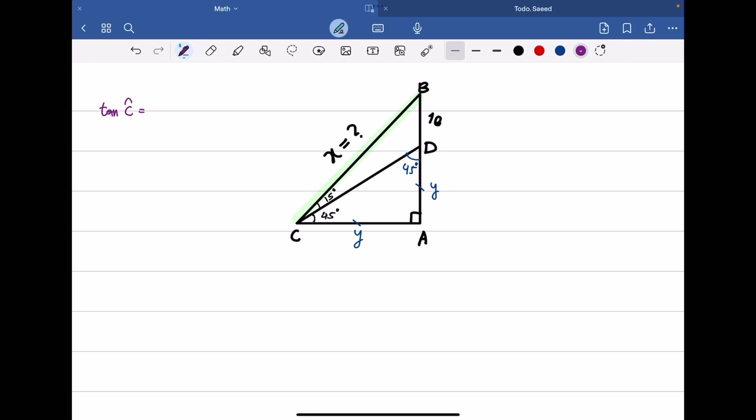The tangent of C is opposite over adjacent, so we have (10 + Y) over Y.